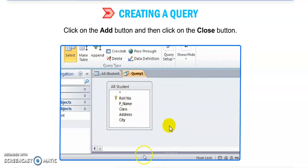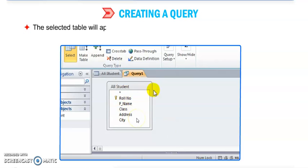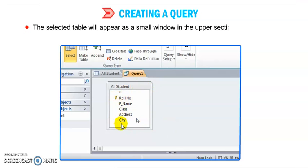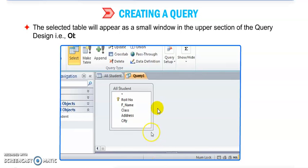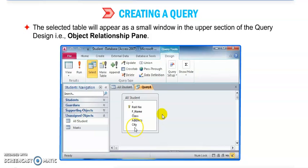Then click on Close button. After that you can see the query window. Selected tables will appear as a small window in upper section of the query design - Object Relationship Pane.